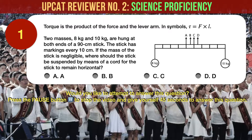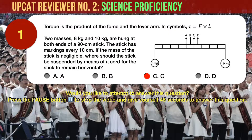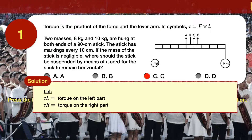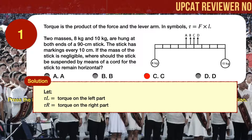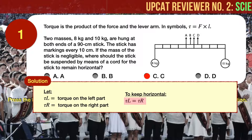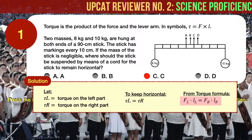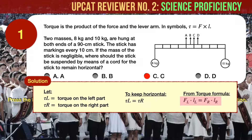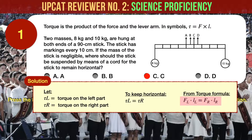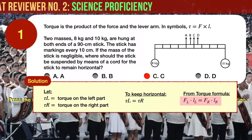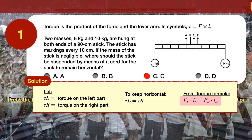The correct answer is C, at point C. Let tau L be the torque on the left part of the stick, and tau R be the torque on the right part of the stick. To keep the stick horizontal, tau L must be equal to tau R. Therefore, the force applied to the left times the length of the stick to the left should be equal to the force applied to the right times the length of the stick to the right.